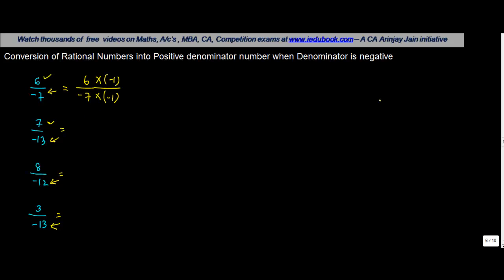When the denominator is negative, the only way you can convert this into a positive number is by multiplying it by minus 1. So 7 into 7 will give you 7, and we know that multiplication of integers with the same sign always has a positive sign. 7 into 1 will give you 7, negative into negative will give us positive.